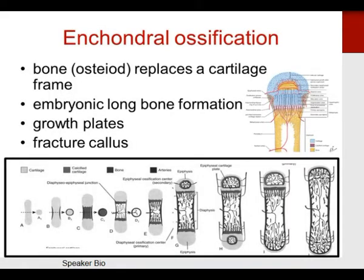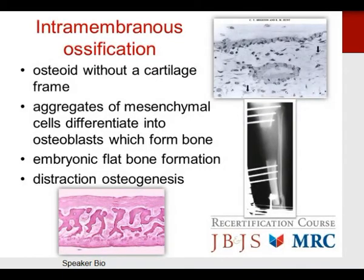There are two types of bone formation: endochondral ossification and intramembranous ossification. Endochondral ossification is how long bones form and how fractures heal — osteoid replaces a cartilage frame. This also occurs at growth plates and fracture callus. Intramembranous ossification is osteoid without a cartilage frame — aggregates of mesenchymal stem cells differentiate into osteoblasts which form bone directly. This is how flat bones form — clavicles, scapulae, and skull bones — and also how distraction osteogenesis forms bone.